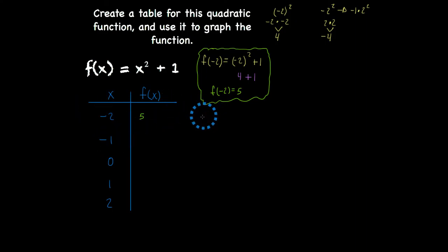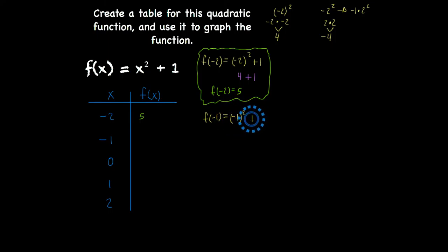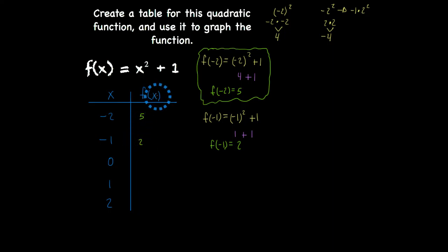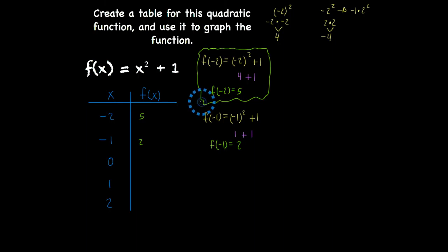Now we have when x is negative 1. So f of negative 1 is equal to negative 1 squared — I'm going to put parentheses around negative 1 — plus 1. Negative 1 to the second power is basically negative 1 times negative 1, which gives you 1. So 1 plus 1 — f of negative 1 is equal to 2. When x is negative 1, f of negative 1 is positive 2.